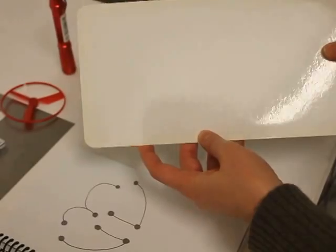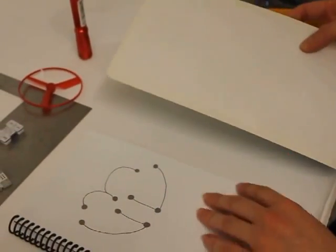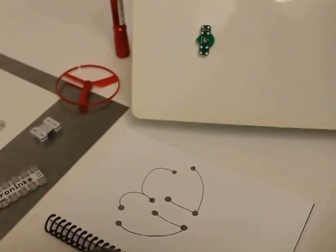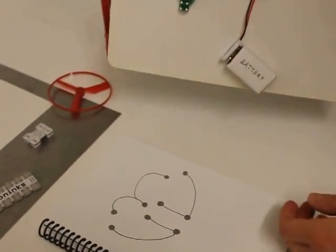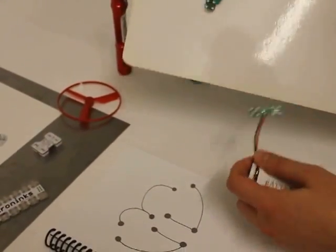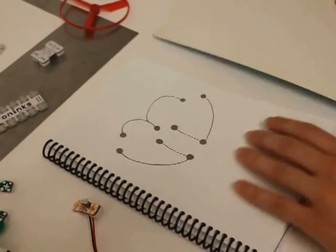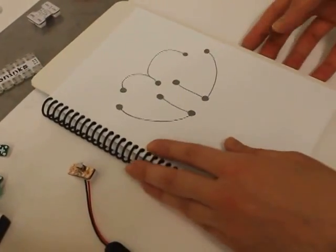This is an example of one of the magnetic sheets that we used to attach the magnetic components. So you can see that those just snap right onto it. It's pretty strong. It can even hold up the battery. So the way that you use that is you just slip it right under the paper that you're working on.